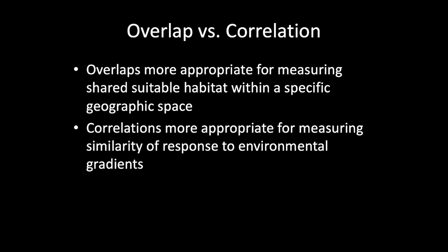To sum that up: overlap metrics offer more appropriate measures for measuring shared suitable habitat within a specific geographic space. But if you want to assess whether responses to environmental gradients are similar or different, the correlation metrics may be more appropriate. Both are implemented in E&M tools, but it's just standard Spearman rank correlation — you can do it easily in R.